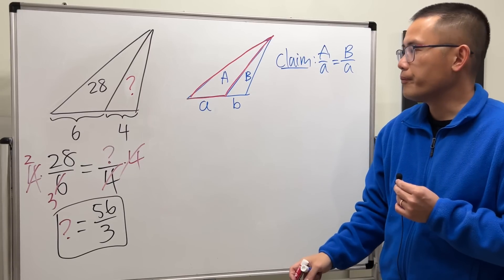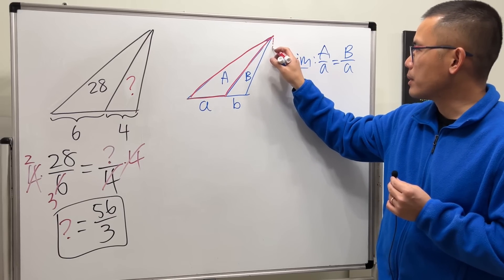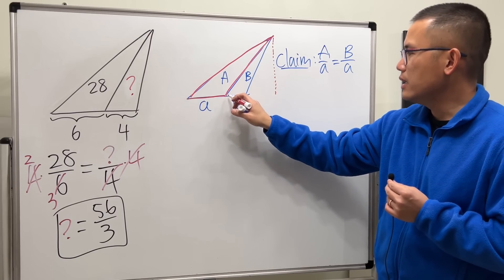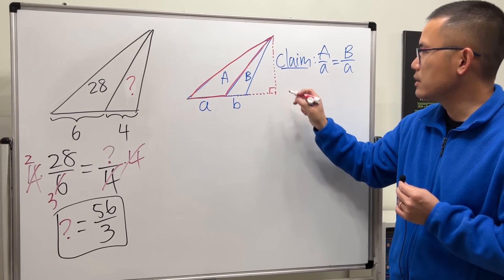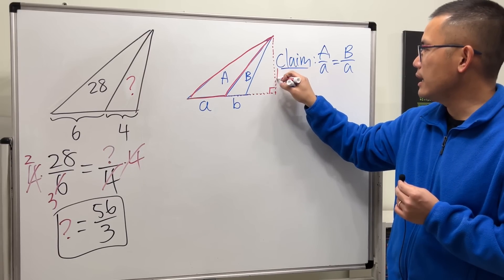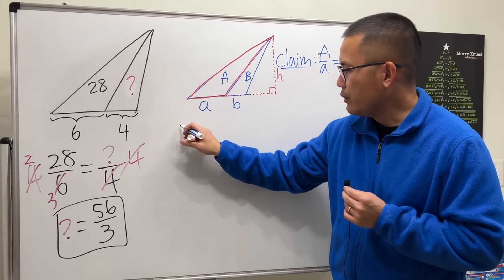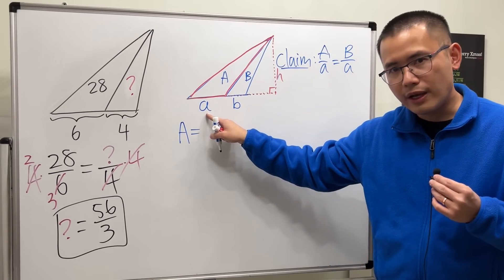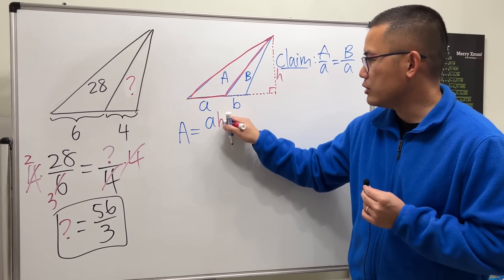To get the area of this red triangle, for the height I will have to start with this vertex here and then drop a perpendicular line so it's like this, and then I will have to extend this right here and make sure it's perpendicular. I'm going to call the height h. Now for the area A, that's just going to be base which is little a times the height which is h, divided by 2. So we have ah over 2.